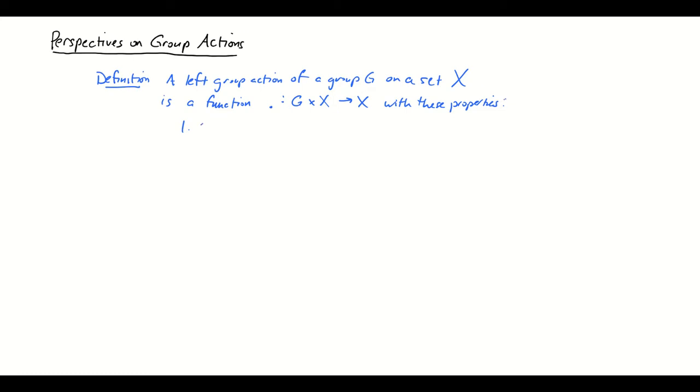Number one, the identity acting on X had to equal X for every X in the set, and number two, (g·h)·x had to equal g·(h·x) for all x and for all g and h in the group.